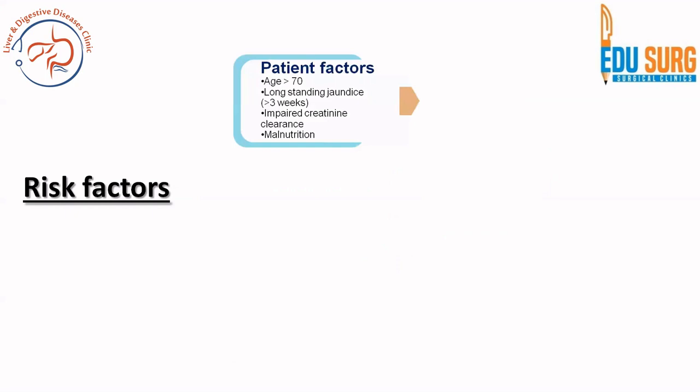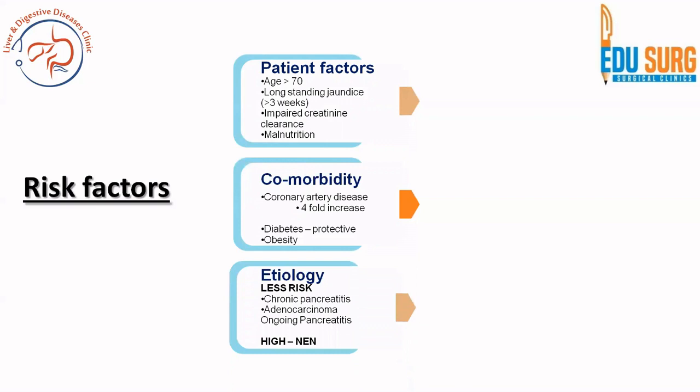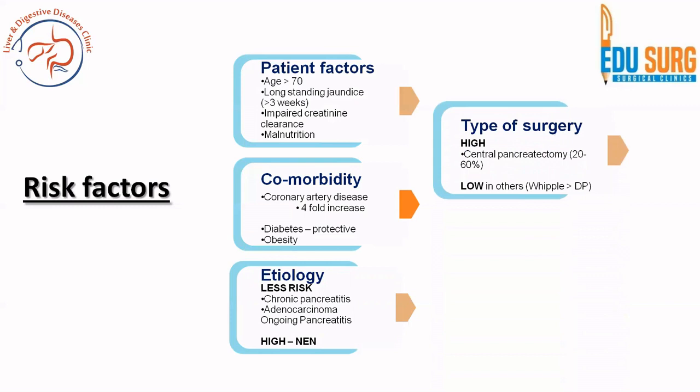Risk factors for pancreatic fistula include modifiable and non-modifiable factors. Patient factors include age more than 70, long-standing jaundice more than 3 weeks, impaired creatinine clearance, and malnutrition. Among comorbidities, coronary artery disease increases risk fourfold, and obesity also increases risk. Diabetes is actually protective because most diabetic patients have a fibrotic pancreas which prevents anastomotic leaks. Regarding etiology, neuroendocrine neoplasms carry high fistula rates, whereas operations for chronic pancreatitis or adenocarcinoma carry lower risk.